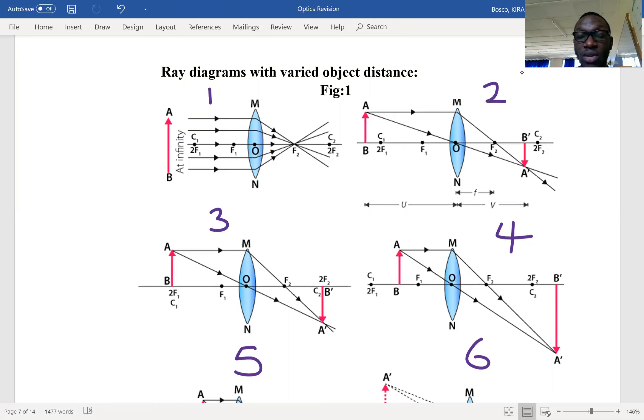We also learned that all rays that pass through the optical center of the lens go through undeviated, or they are not refracted. The third principle: all rays that pass through the focal point, after refraction by the lens, move parallel to the principal axis.